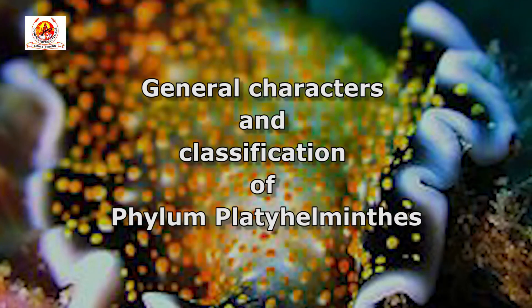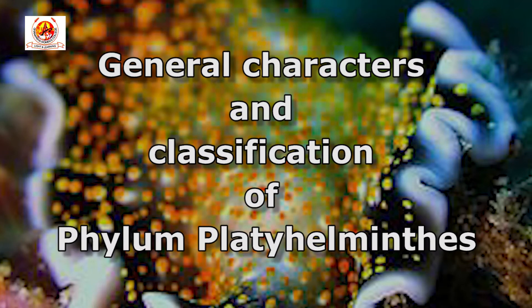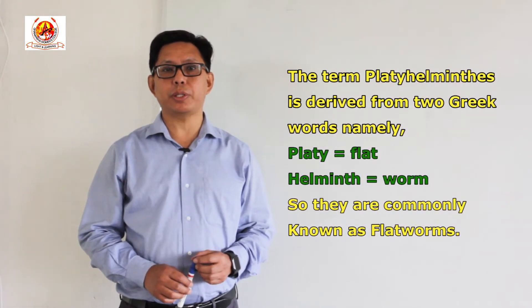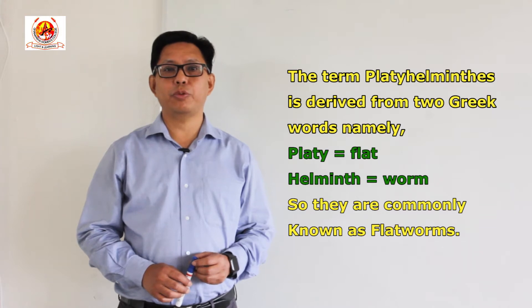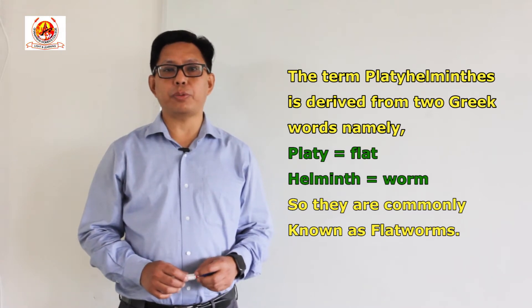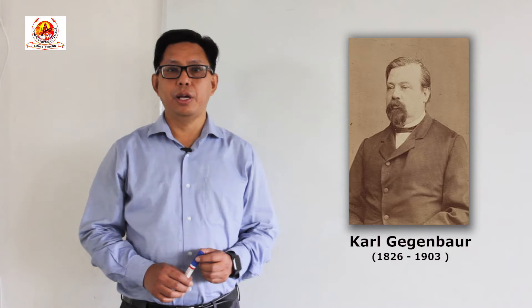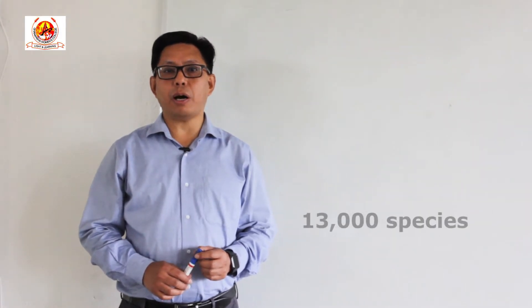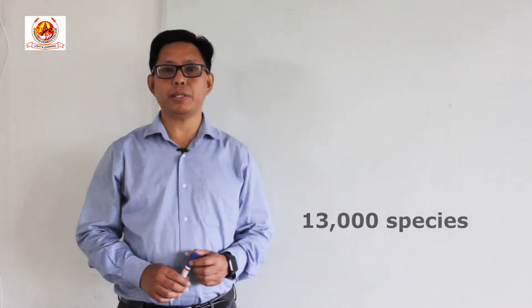Hello students. The topic I am going to discuss today is general characters and classification of phylum Platyhelminthes. The term Platyhelminthes is derived from two Greek words, namely 'platy' meaning flat and 'helminth' meaning worms. So they are commonly known as the flatworms. The term Platyhelminthes was proposed by Gegenbaur in the year 1859. There are about 13,000 species of phylum Platyhelminthes.